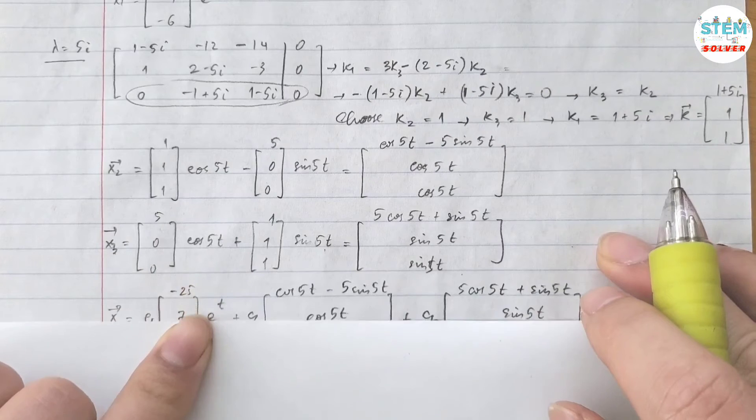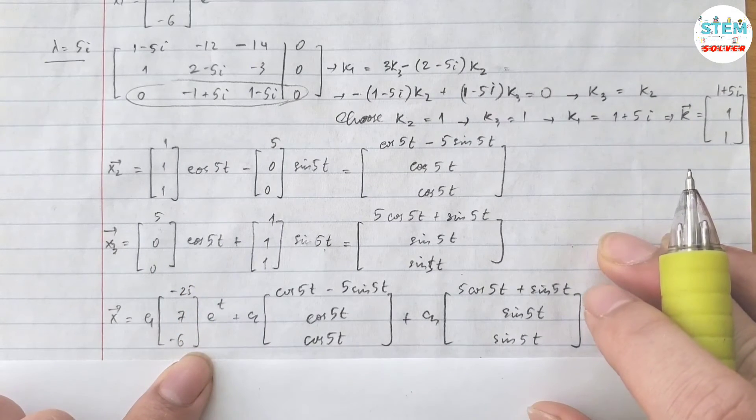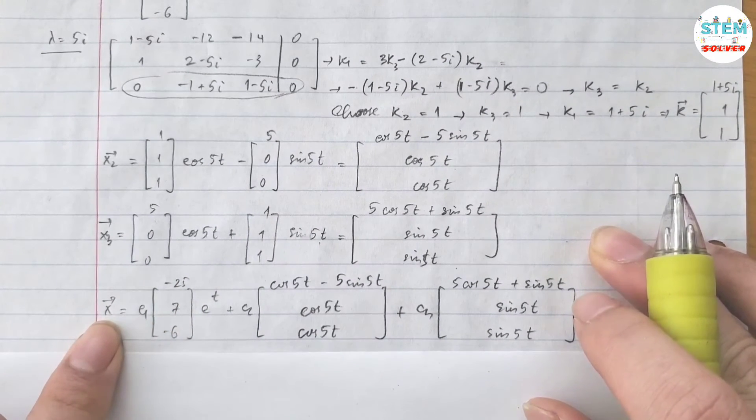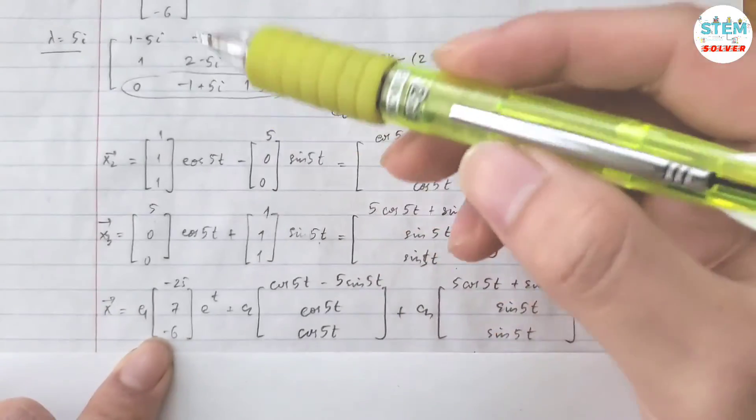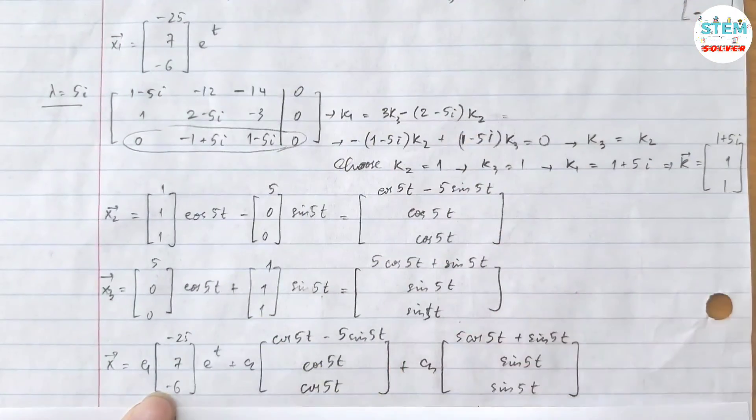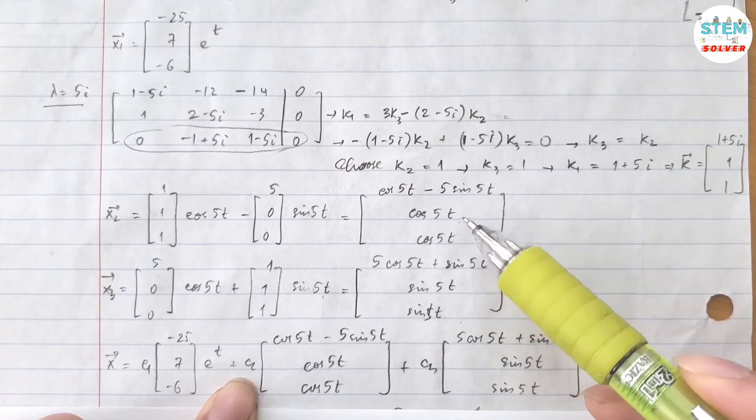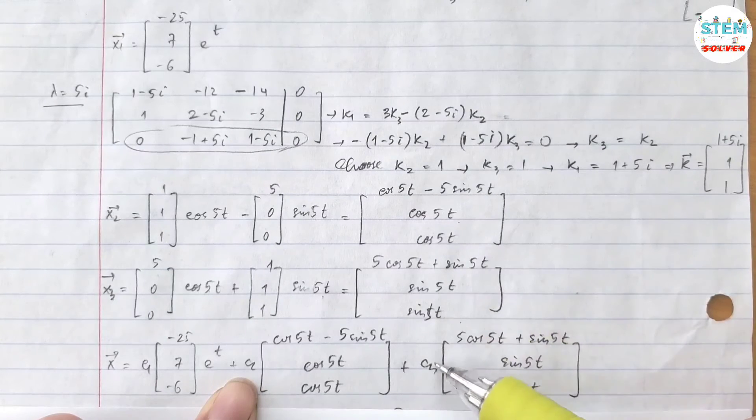Now for our general solution, we have vector x equals c1 times vector x1, which is this vector, bring it down, plus c2 times this vector, plus c3 times vector x3.